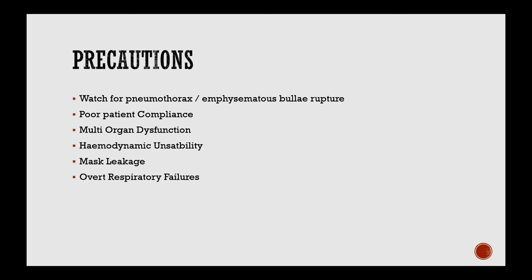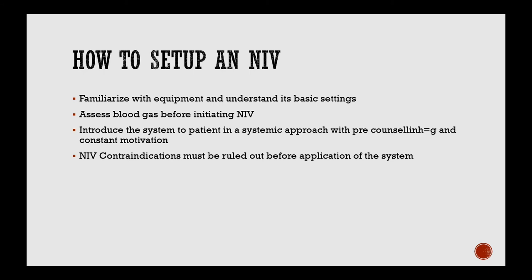Precautions to take while performing NIV include: watching for pneumothorax and emphysematous bulla rupture, re-educating patients with poor compliance before restarting NIV, and monitoring for multi-organ dysfunction and hemodynamic instability. Overt mask leakage or respiratory failure not corrected initially with NIV should prompt planning for mechanical ventilation.